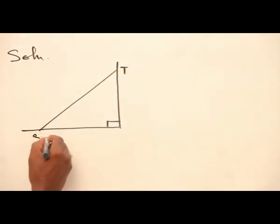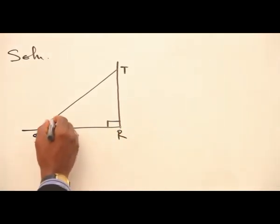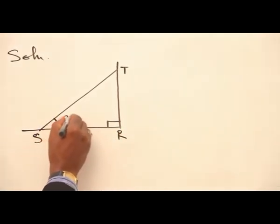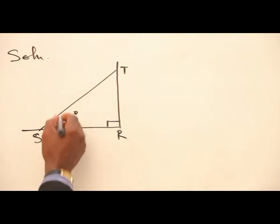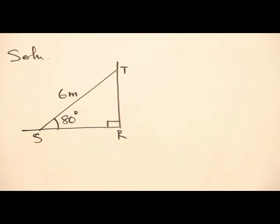Let's call this point S, and this is point R. Then the angle is 80 degrees, and then the length is 6 meters.